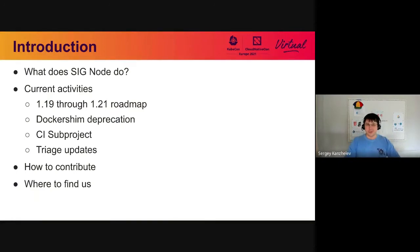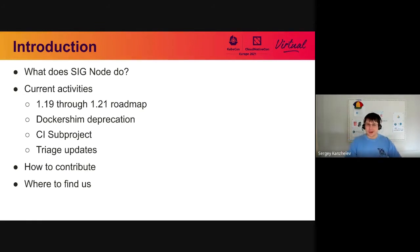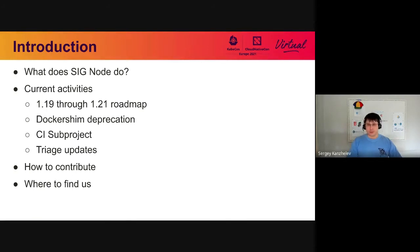What we will be talking about today is an overview of SIG Node, what it is and what components it has. We will talk about current activities and what we did in recent releases, and we will talk about the roadmap going ahead. Then we will talk about a few specific projects and features like Docker Shim deprecation. Finally, we'll go into sub-projects and how you can get involved in SIG Node.